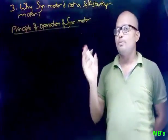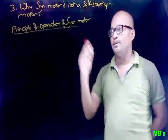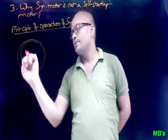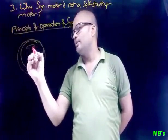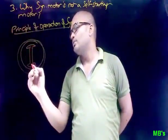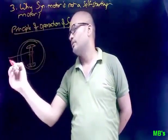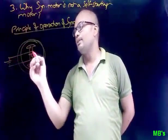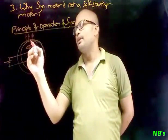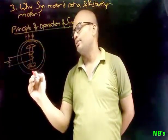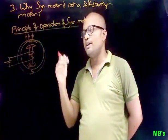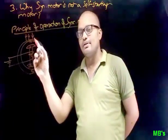The principle of operation of a synchronous motor is magnetic locking, and I will explain that now. Suppose this is the stator and this is the salient pole rotor. Let the poles formed because of the DC excitation supply be north pole and south pole, and because of the input supply, let the poles formed on the stator also be north pole and south pole.